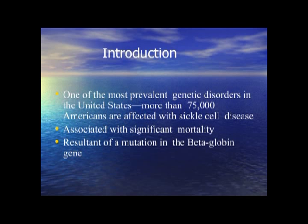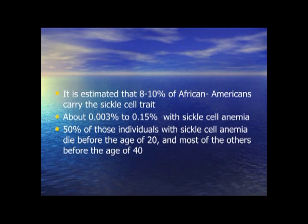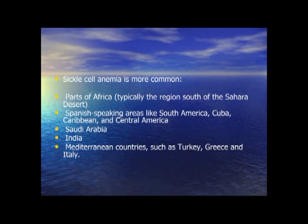Moving on to sickle cell disease — it's a genetic disorder common in about 75,000 Americans, resulting from a mutation of the beta-globin gene. It's most common at 8–10% in the African-American population as a sickle cell trait, and 0.03–0.15% have sickle cell anemia. 50% of those with sickle cell anemia die before age 20. It's also common worldwide — in Africa, Spanish-speaking areas like South America, Cuba, the Caribbean and Central America, Saudi Arabia, India, and the Mediterranean.